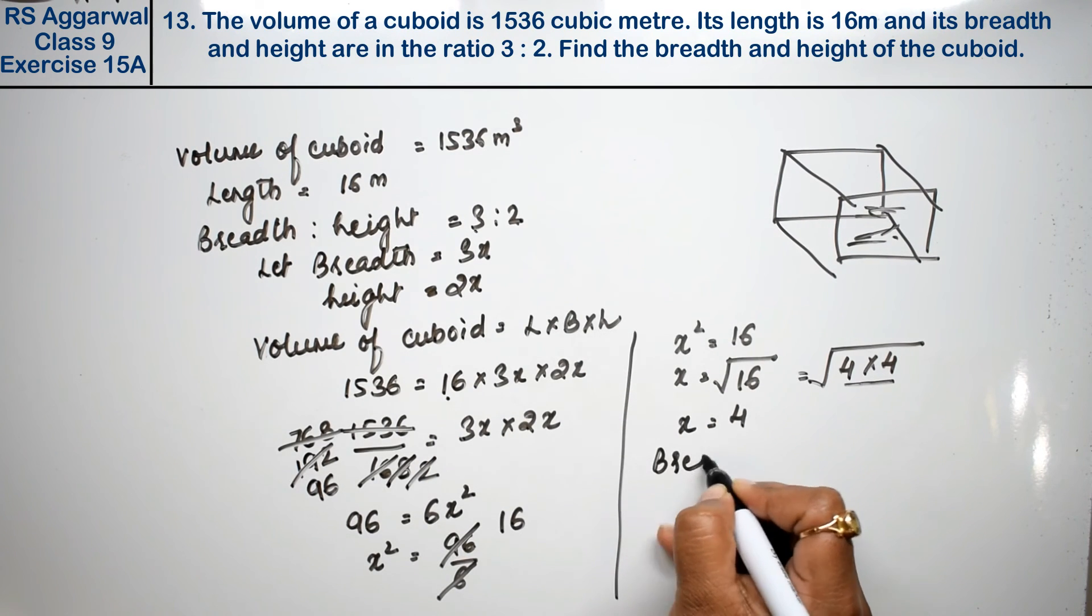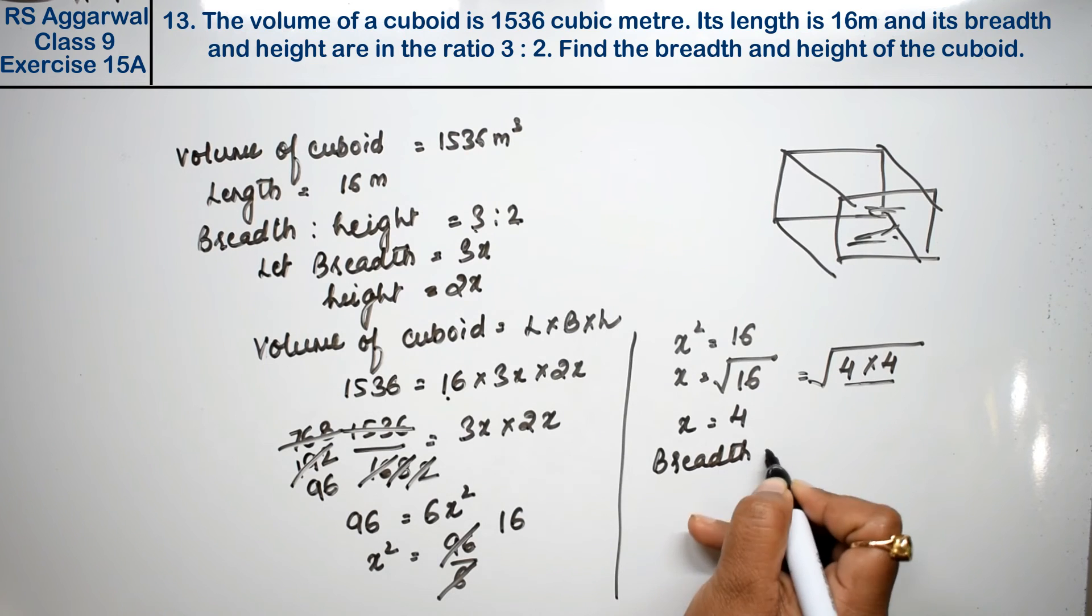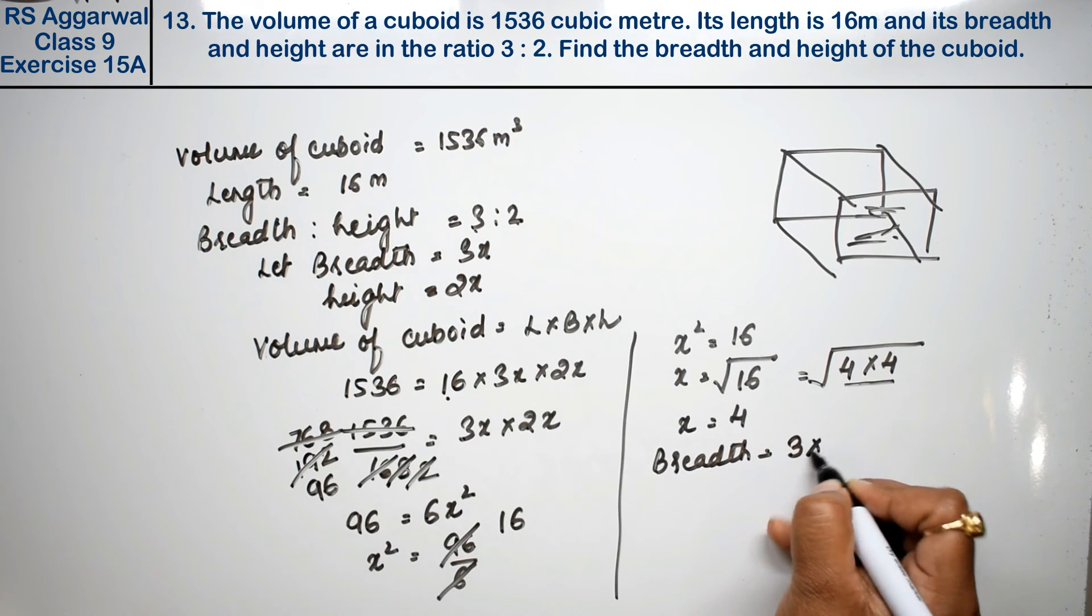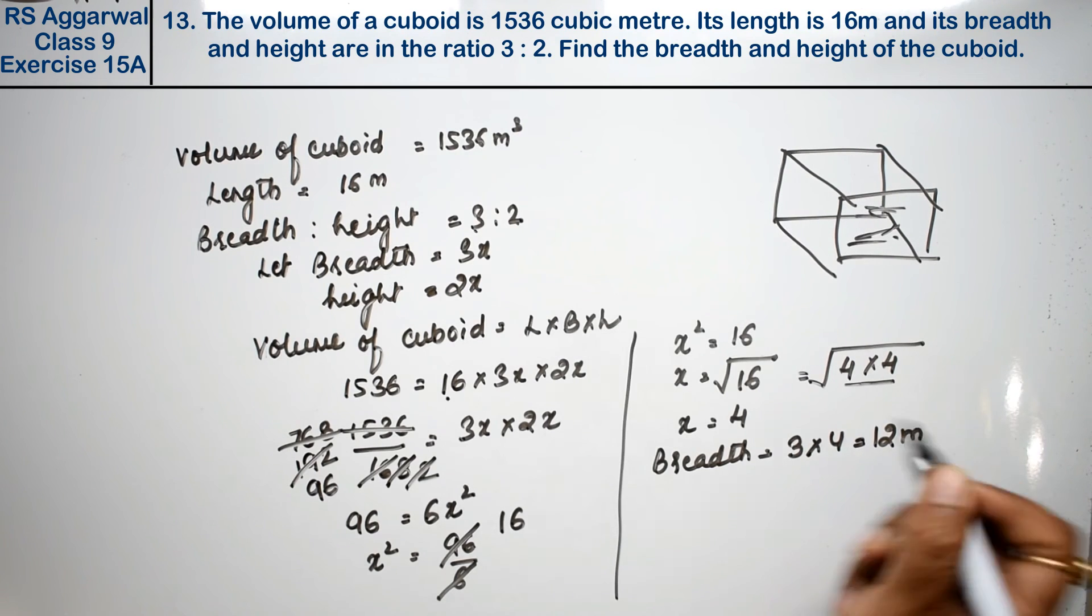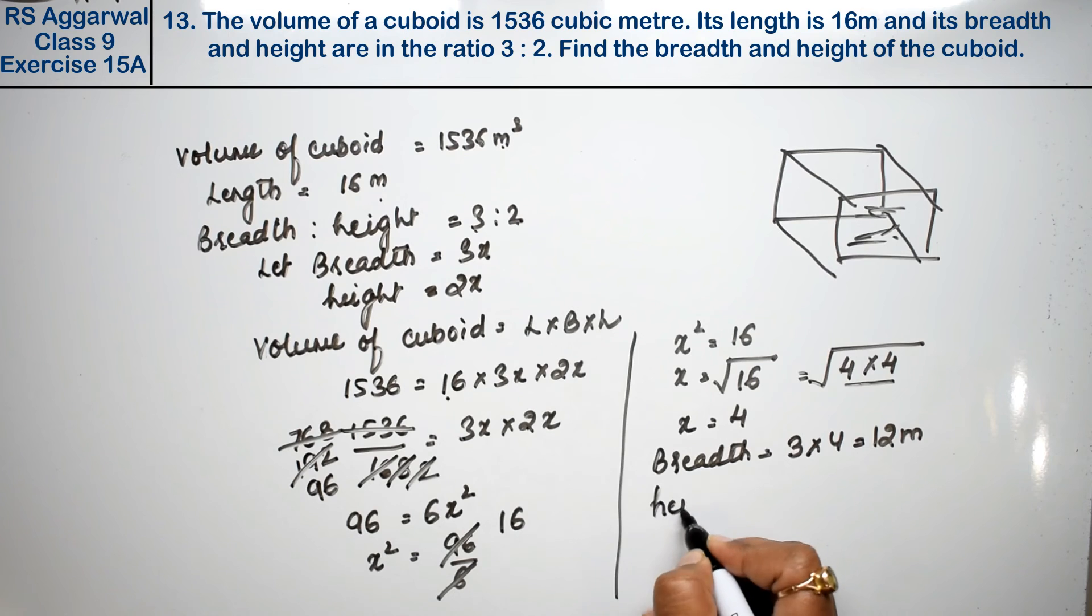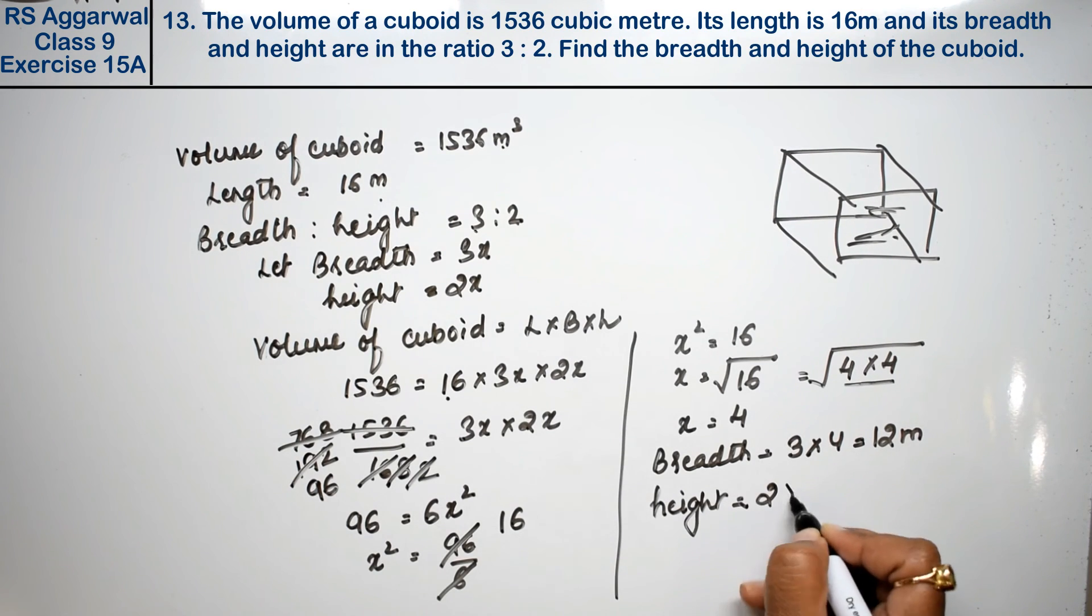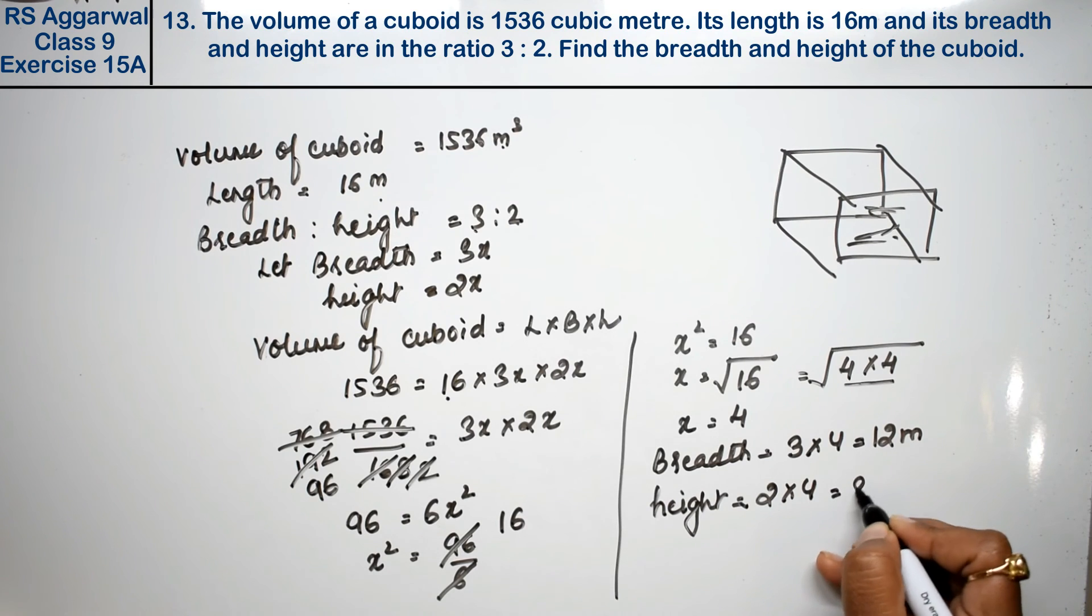Now we will take out the breadth. 3x is 3 into 4, that is 12 meters. We have all the units in meters. Height: 2x is 2 into 4, that is 8 meters. That is the answer.